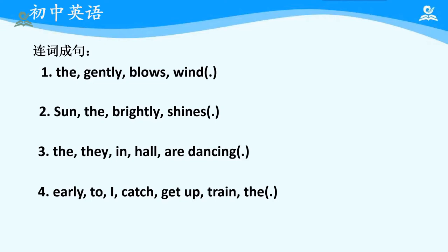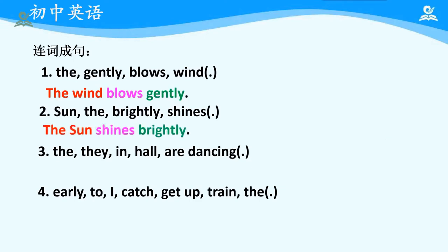Welcome back. Now let's check the answers together. The first one: The wind blows gently. 这句话当中，主语是 the wind，blows 是谓语动词，而 gently 作为副词来形容 blows。The sun shines brightly，这句话的结构和前面一句话的结构是一样的。